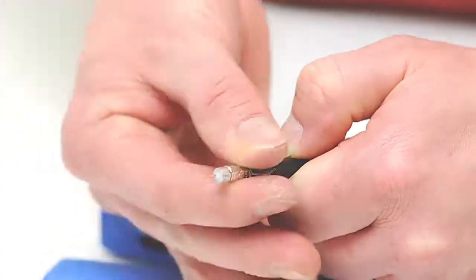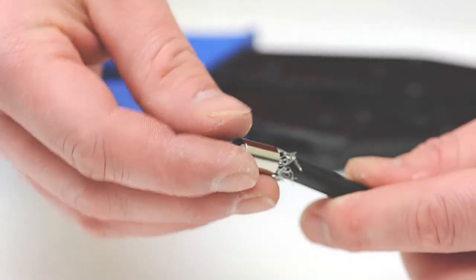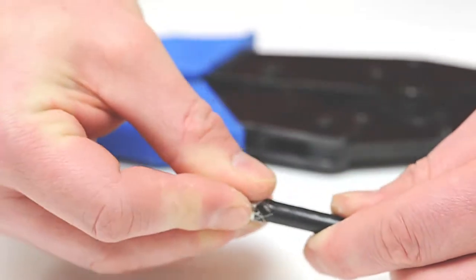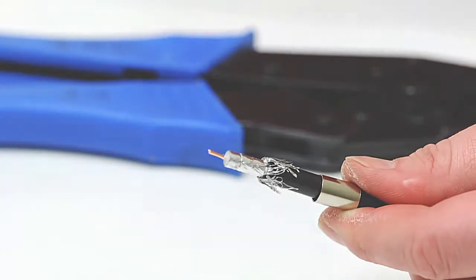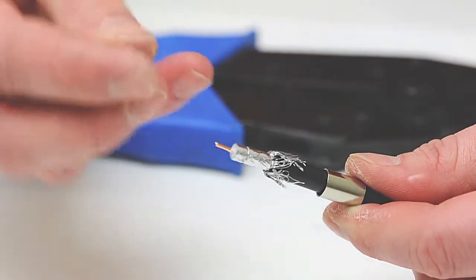Fold the braided shield on top of the jacket, slide the ferrule over the braid and the jacket. Insert the center pin of the center conductor.